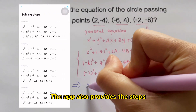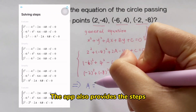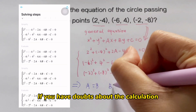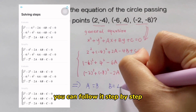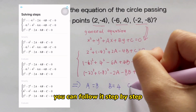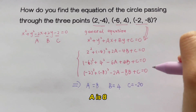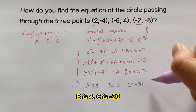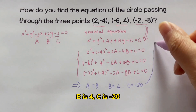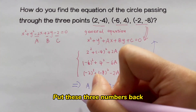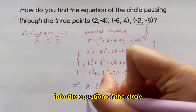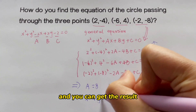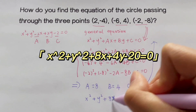The app also provides the steps. If you have doubts about the calculation, you can follow it step by step. a is 8, b is 4, c is minus 20. Put these three numbers back into the equation of the circle, and you can get the result.